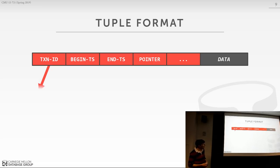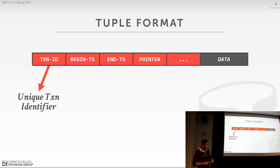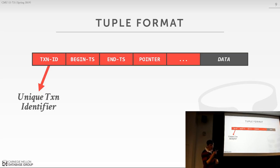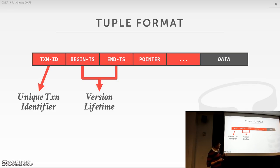All tuples are going to have some kind of unique transaction identifier. For MVCC, this is a timestamp — either a physical timestamp like a wall clock time, a logical clock like a counter, or a physiological clock which is a combination of wall clock time and a logical counter. Then we have our begin and end timestamp, which we'll use to figure out the version lifetime for a particular tuple — to determine for my transaction, does this physical version exist in my consistent snapshot based on my timestamp.